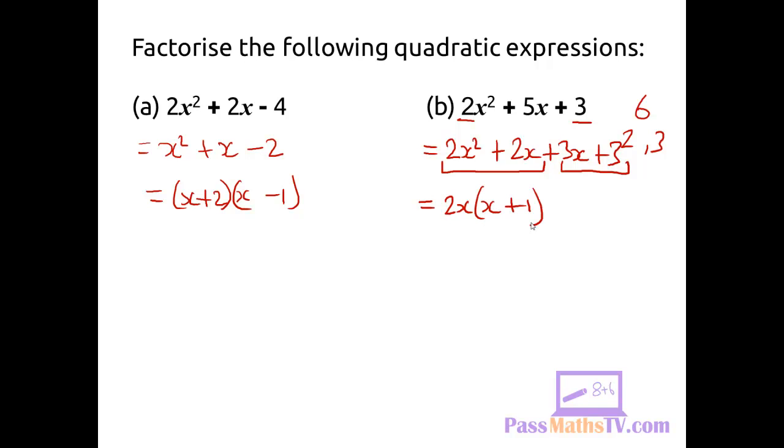And if I factorize this side I end up with 3 outside and x plus 1 inside. Now looking at this expression here you can see that 2x is multiplying x plus 1 and 3 is multiplying x plus 1.